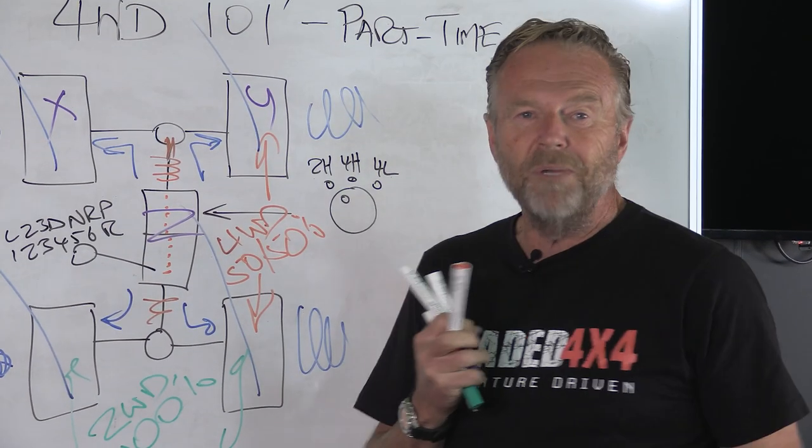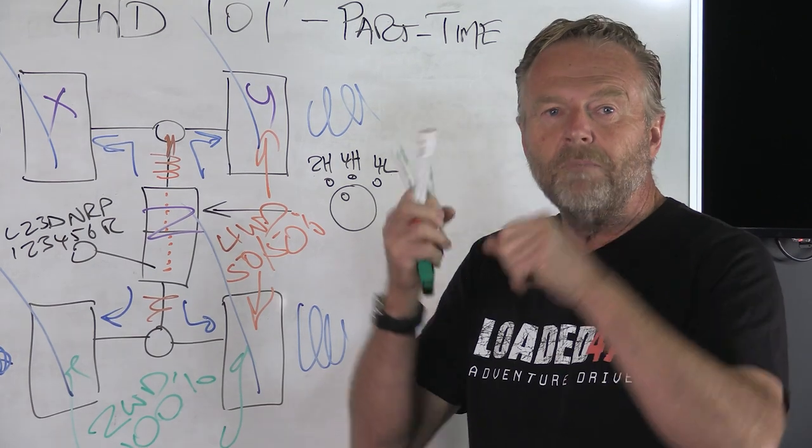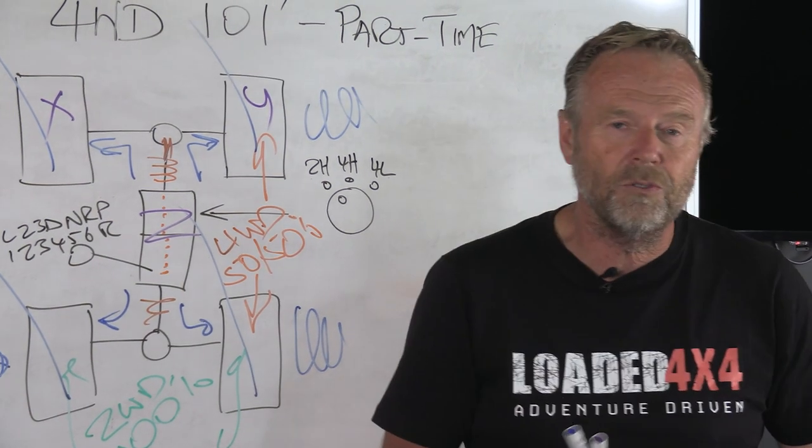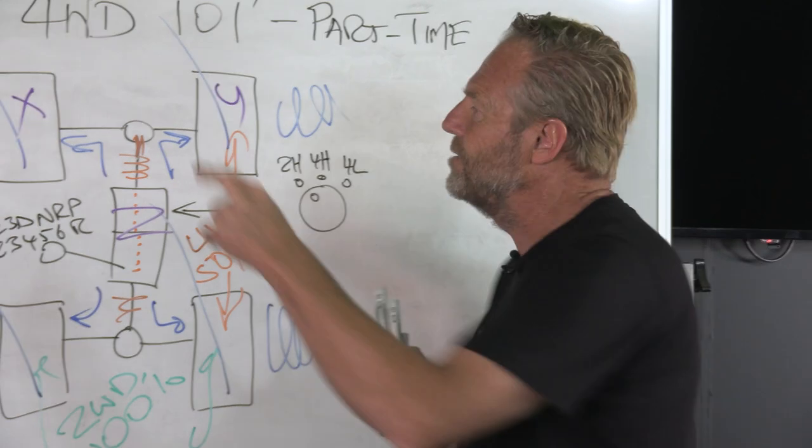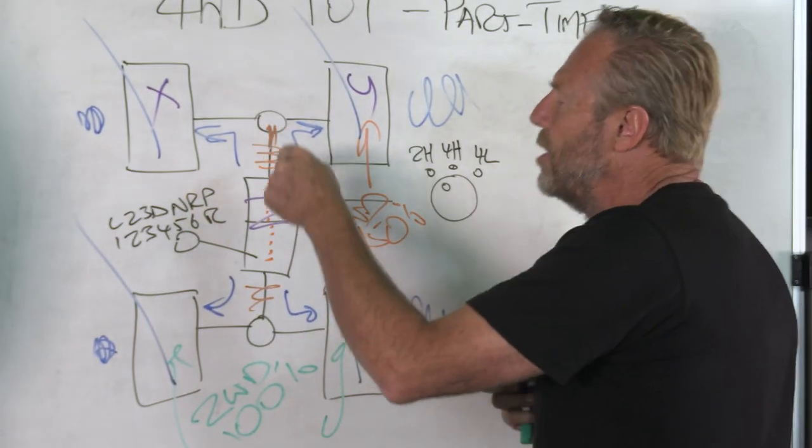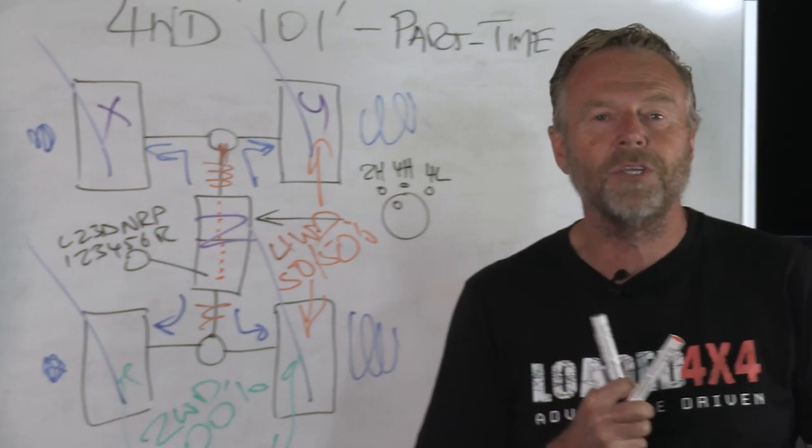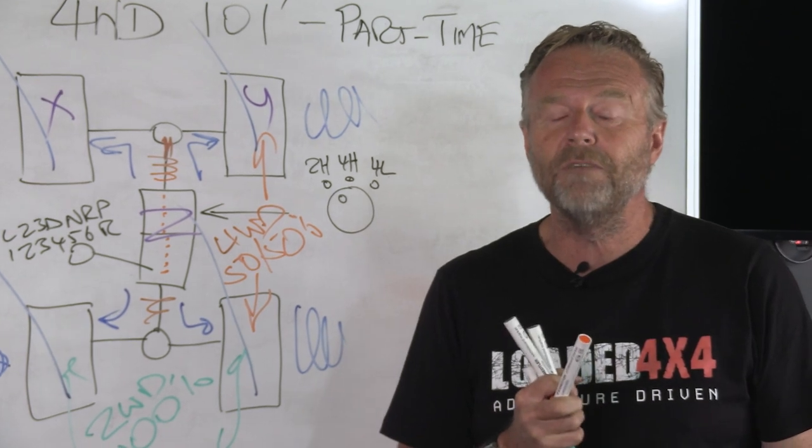But in this case where we're on a bitumen road, it just builds up and builds up until the next sensation you'll notice is dollar signs whizzing around in front of your eyes because you've just broken either the front differential or smashed something in the transfer case, and that will cost you significant money.